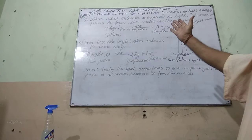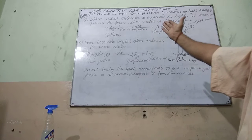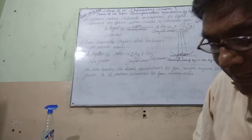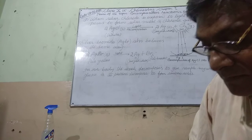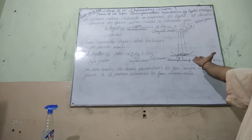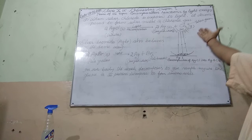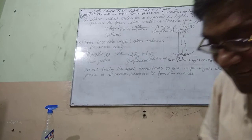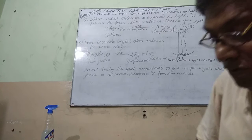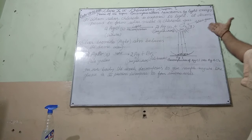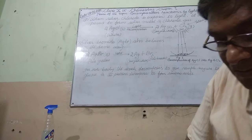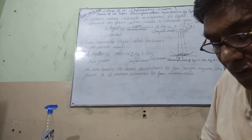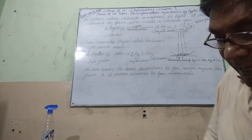First, we have to know that when silver chloride is exposed to light, it decomposes to form silver metal and chlorine gas. Silver chloride is a white color chemical compound in solid state. In this reaction, the white color of silver chloride changes to greyish white due to the formation of silver metal. The decomposition of silver chloride is caused by light — it may be sunlight or bulb light.